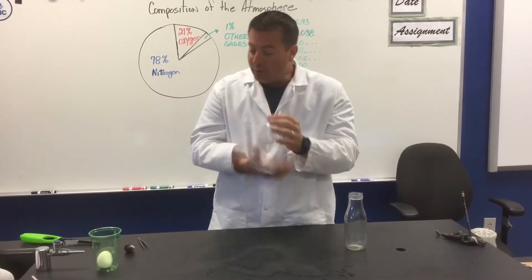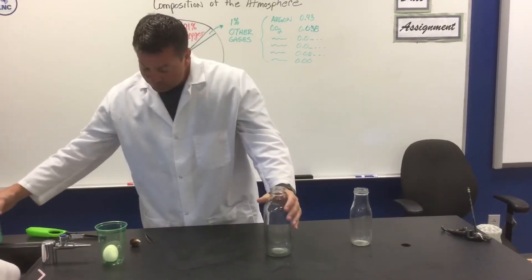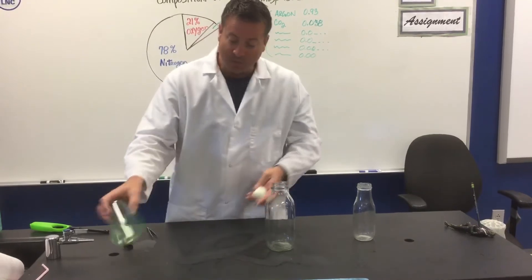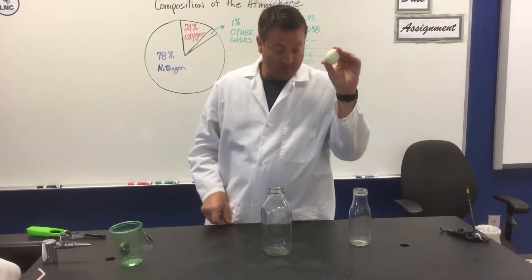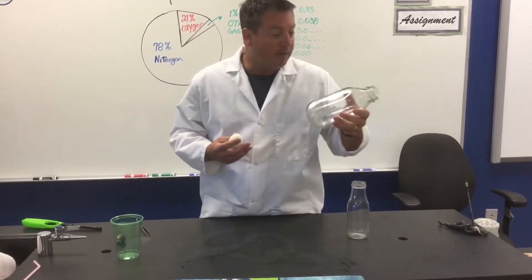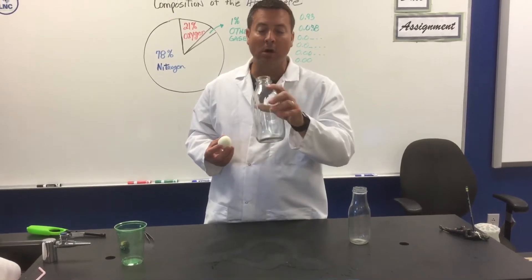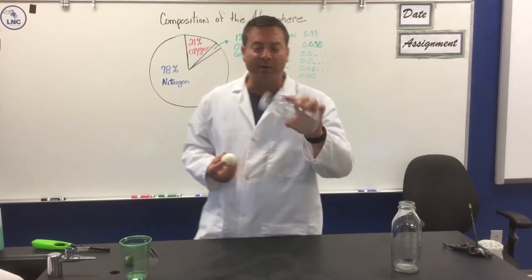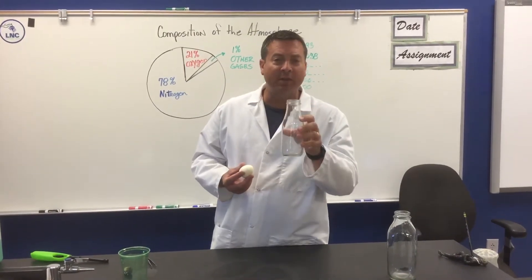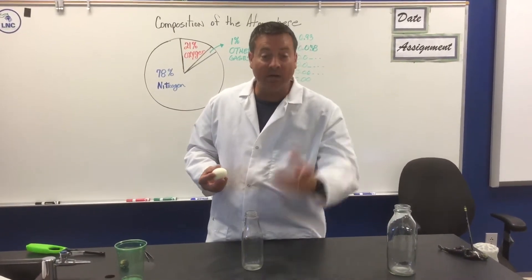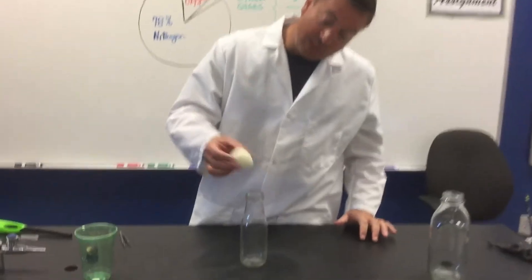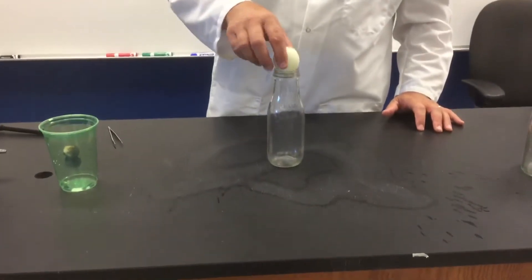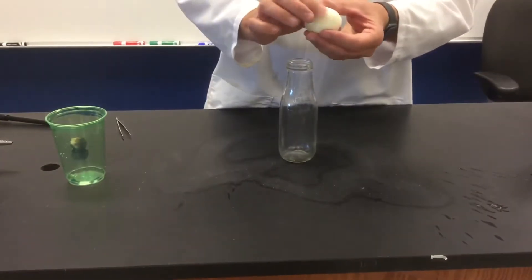We can do another example of that, but this time we're going to use an egg. I have an old-fashioned milk jar and a jar that came from one of those Starbucks cappuccino things. As you can see, I take the egg and place it on there. This is a hard-boiled egg — the shell is off, so it's a little pliable.